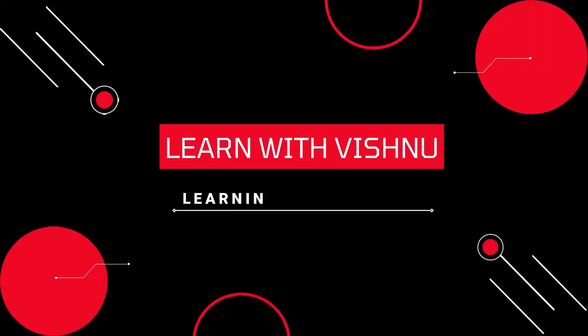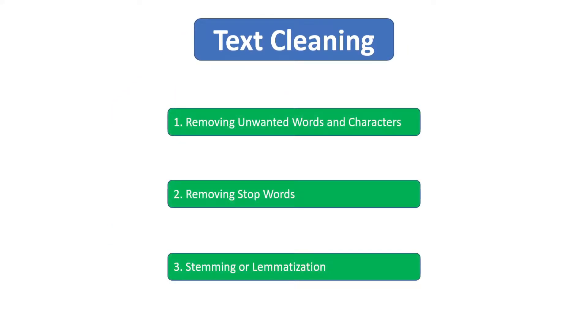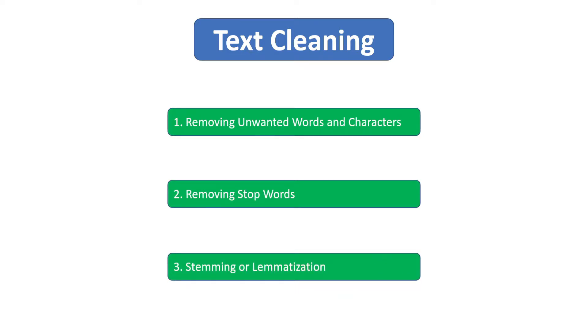In this video, we are going to see why we need to clean text and how to do that. Let's see how we can clean raw text. First we have to remove unwanted words and characters from the raw text. Then we have to remove stop words, and we have to do stemming or lemmatization. Steps 2 and 3 are optional — if you want you can do them, otherwise you can simply skip them.